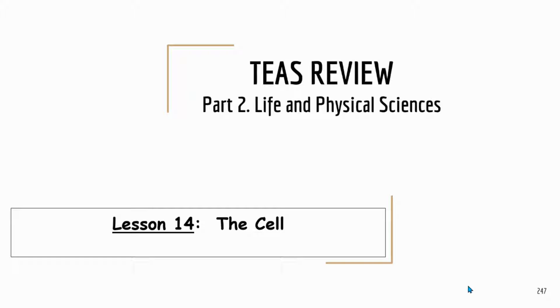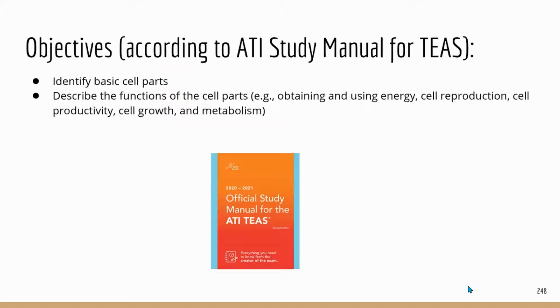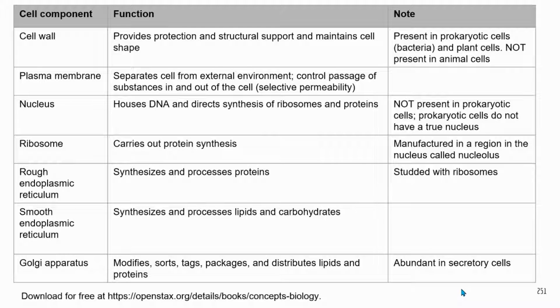The information in this chapter is very straightforward — nothing very complicated. You may have to work a little bit to memorize the information for the cell. The exam expects you to identify basic cell parts and know the functions of the different cell parts. Based on the information in the TES study manual, I made a large table listing the cell parts mentioned, along with their functions and some notes.